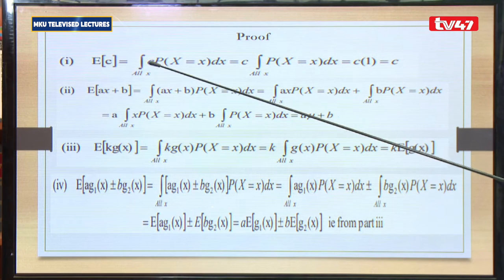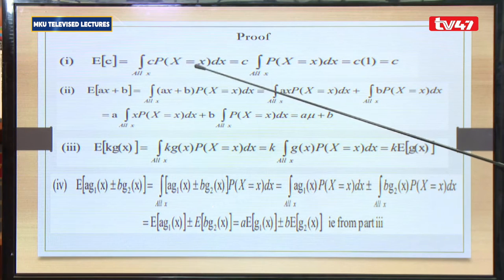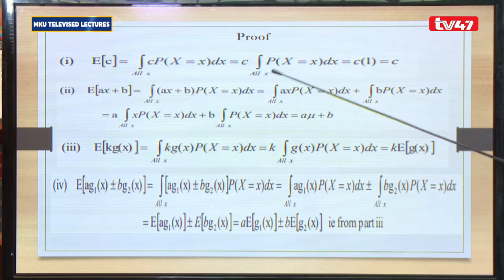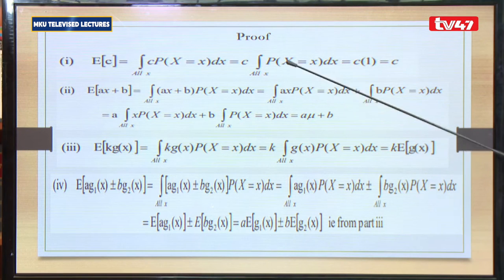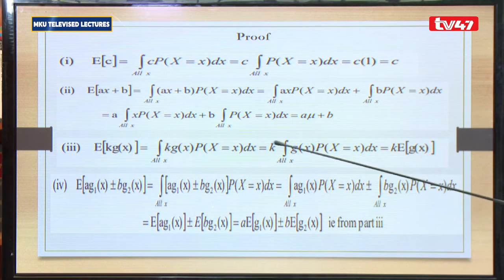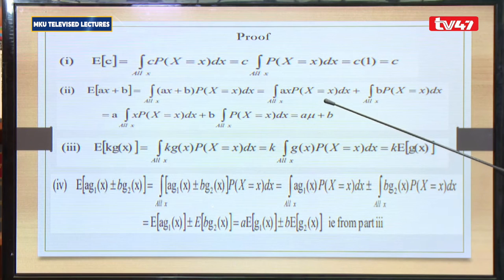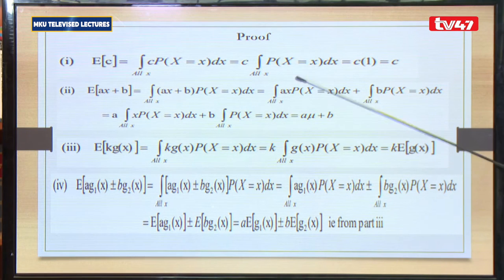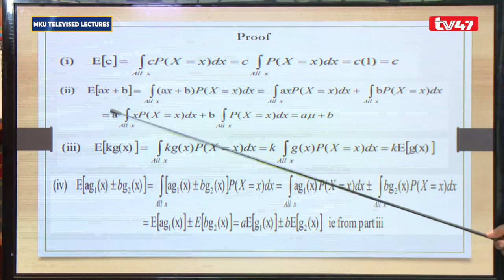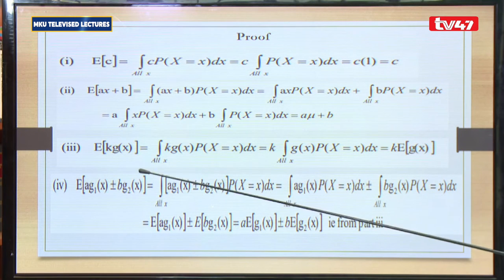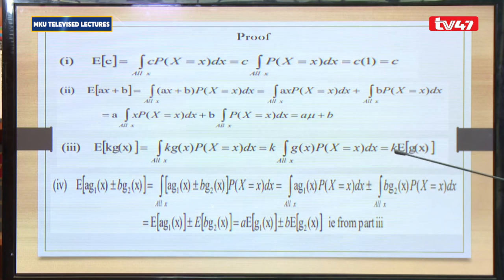For the proof: E[c] equals c because c multiplied by the sum of p(x) over all x equals c times 1, since the PMF sums to 1. For the linear case, applying the integral or summation over ax + bx times the PDF gives a·E[x] plus b, since a is a constant that factors out. Similarly for E[k·g(x)], k comes out as a constant, and for E[a·g₁ + b·g₂], the same approach applies.